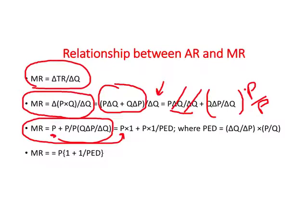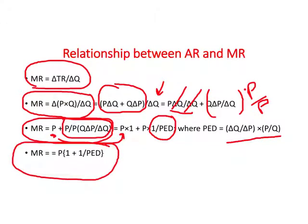Price can be written as price times one, and the remaining part equals price times the inverse of price elasticity of demand. The formula for price elasticity of demand is well known, and so what you find is marginal revenue equals P times one plus P times the inverse of price elasticity of demand. Taking out P as the common term, this gives us the exact mathematical relationship between marginal and average revenue, where average revenue is the same as price. So marginal and average revenues are related through price elasticity of demand.